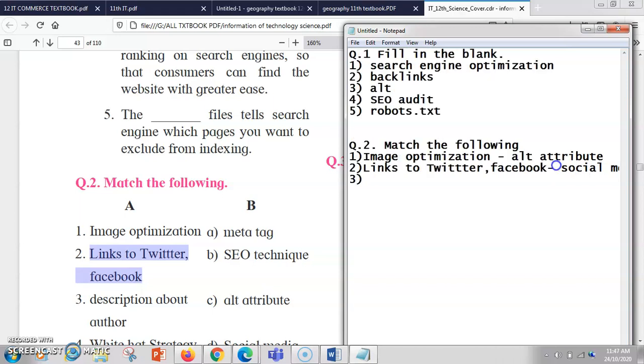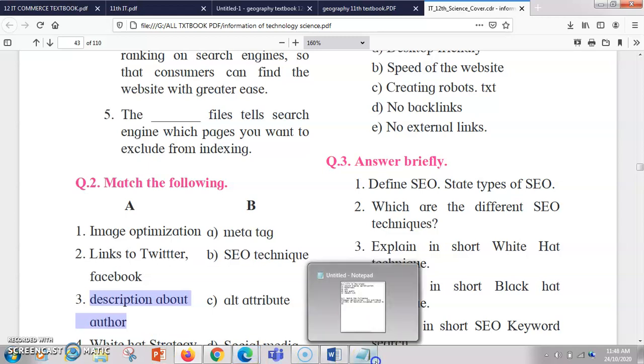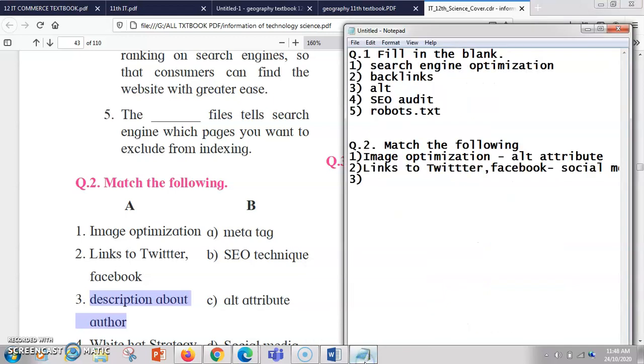Next one is description about author. So now if you want to give any description about the author, basically you're going to give that description in the meta tag. Okay, so the content which is written in the meta tag is not displayed on the output screen, so you can give the description about the author. So here the answer will be meta tag.